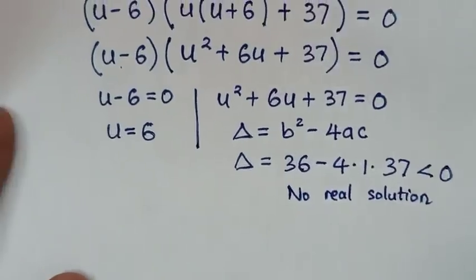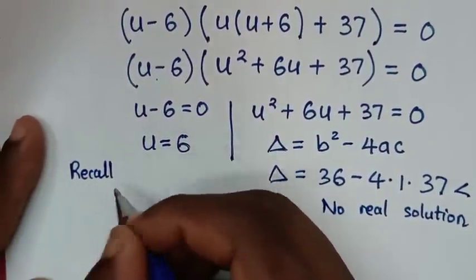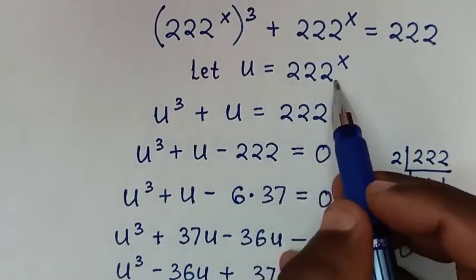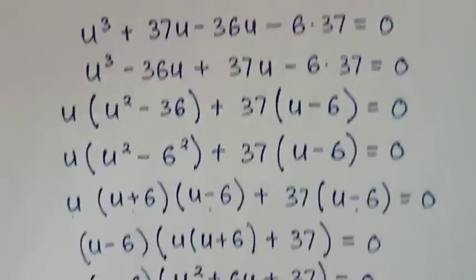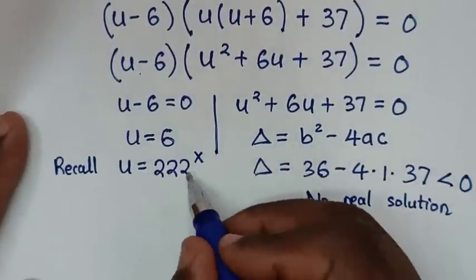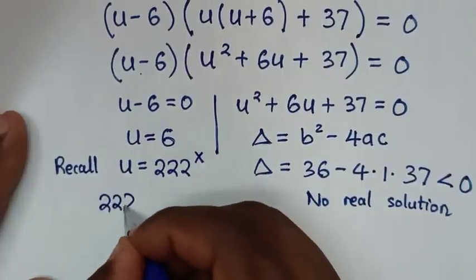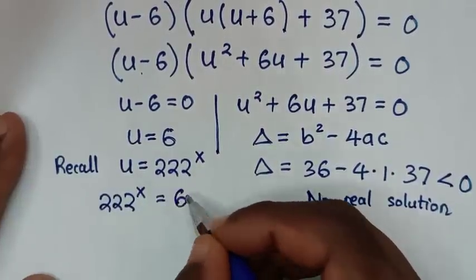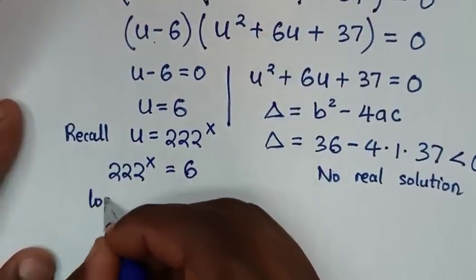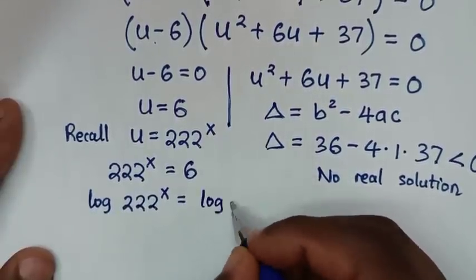So from here, u equals 6. Recalling that we let u equal to 222 power x, we compare the two equations: 222 power x equals 6. We apply log to both sides, so log of 222 power x equals log of 6.